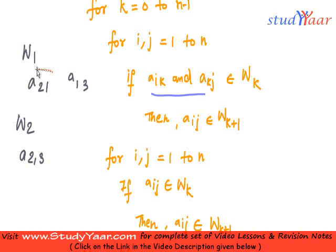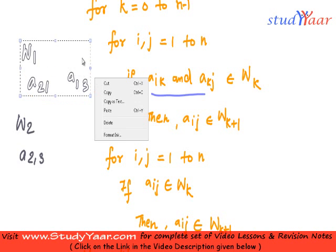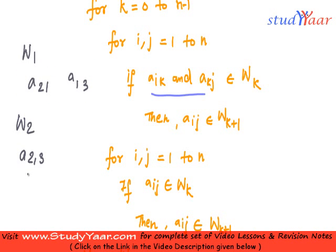And it is also going to contain whatever is present in W1. It is also going to contain a_ij in Wk+1. And what is this a_2,3? Let us assume my a is like this: a1, a2, a3, up till an.